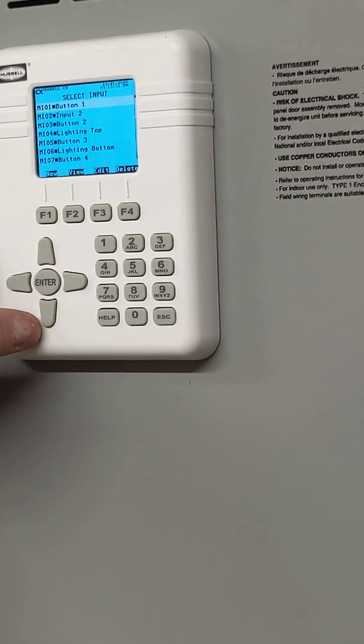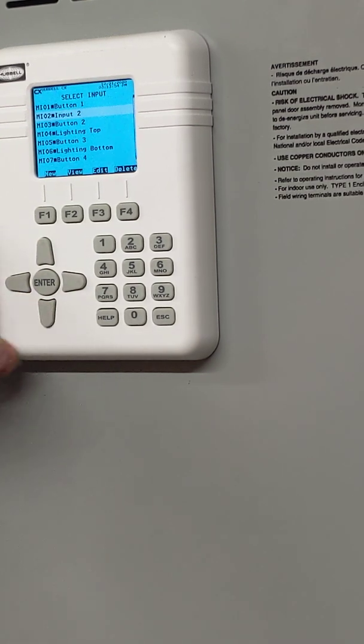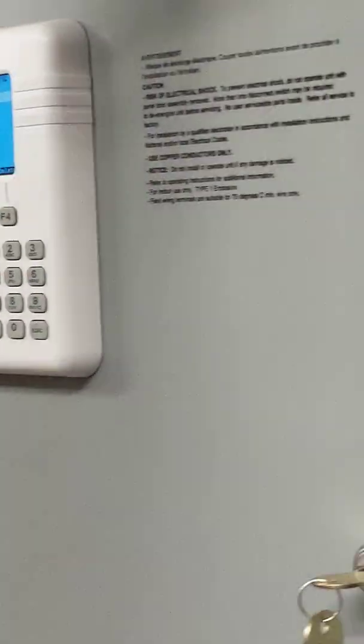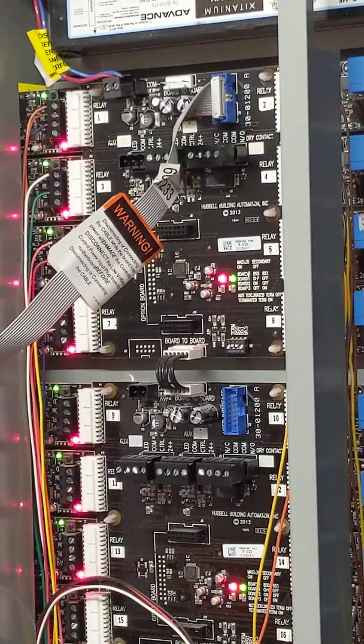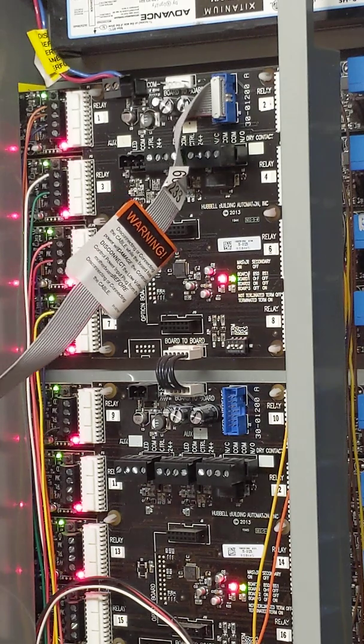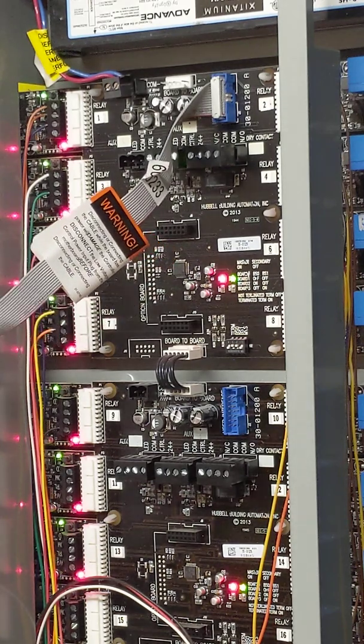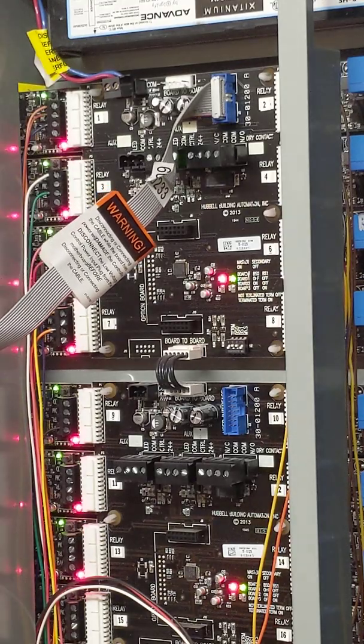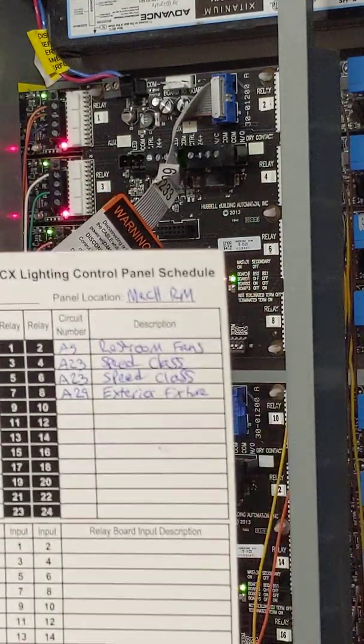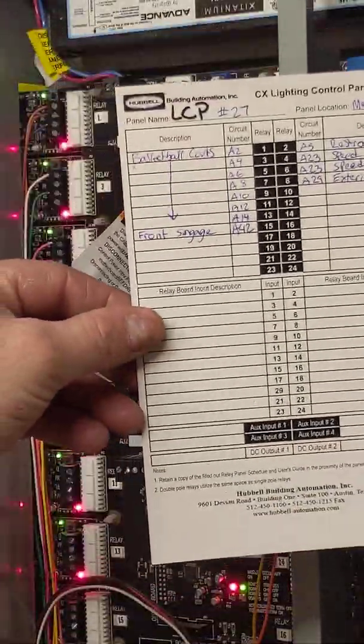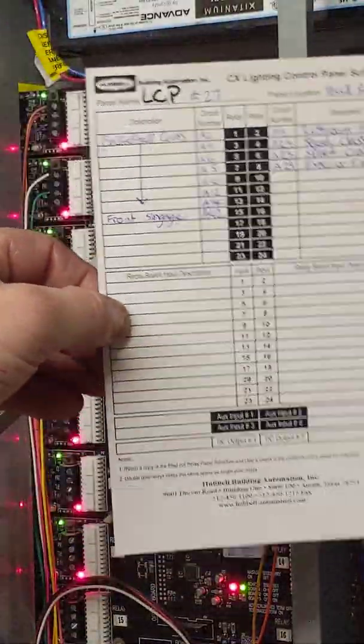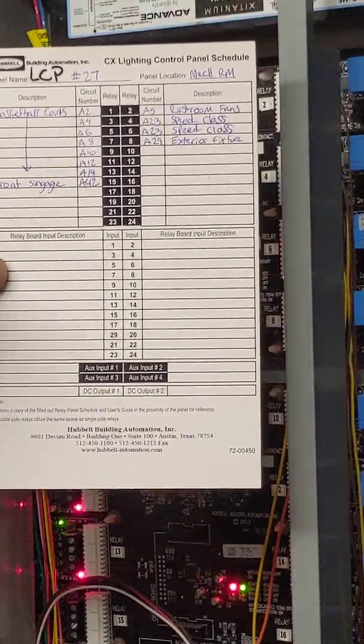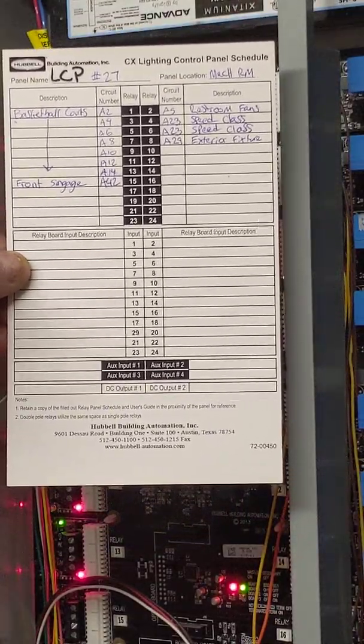So then this is it right here. So inputs. So then you have to give your inputs a name. You gotta identify what your inputs are. All right. So M-I-O-1 input. M-I-O-1 input. Let's try to describe that better here. Perfect. Let's use this card again. Okay. Let's see if I hand that in focus here. Right there. So you see how you have inputs at the bottom. Relay board. Input description.